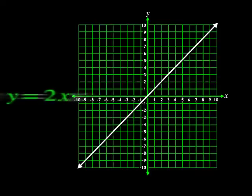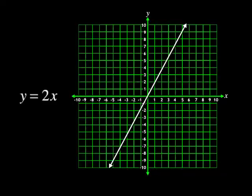What if we change the equation to y equals 2x? See, the line looks steeper. What about the graph of the equation y equals 4x?